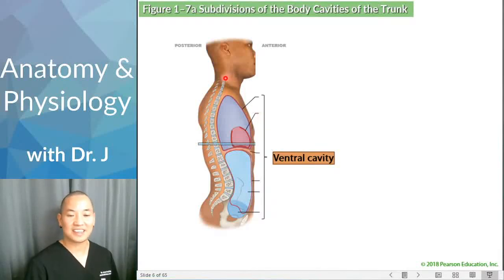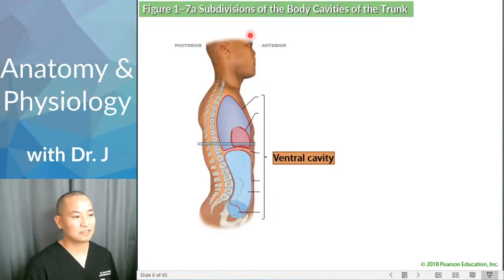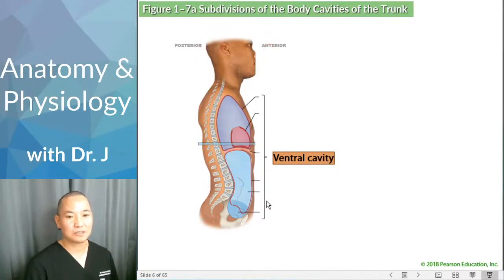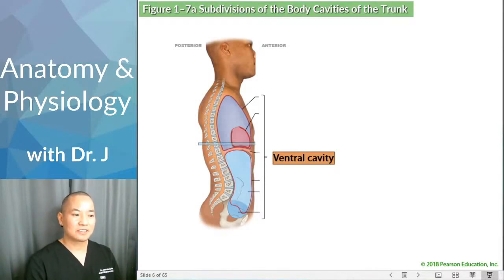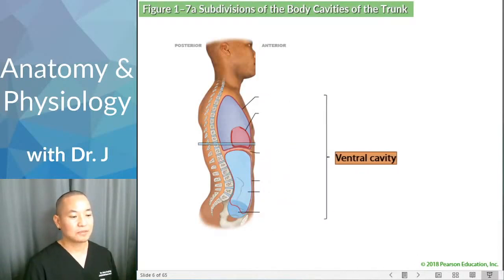Here's the ventral cavity — this is the one in the anterior. There is also a dorsal cavity in the back, which contains the brain and spinal cord. Remember, ventral in humans is the same thing as anterior, so the ventral cavity contains all the anterior parts.